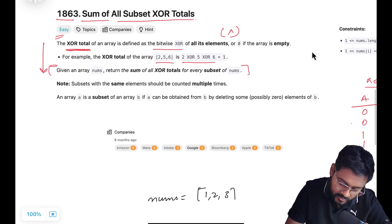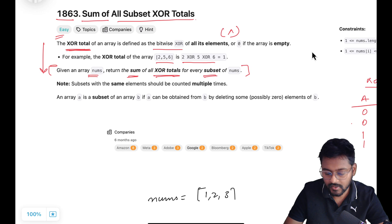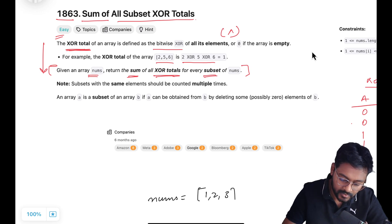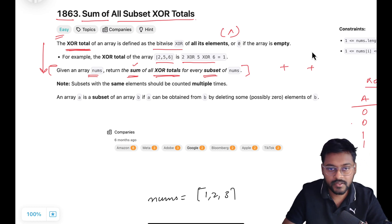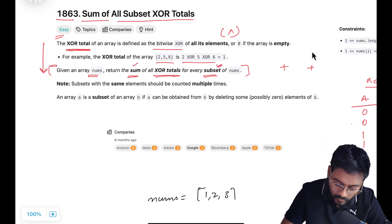After that what is given to us? Given is an array and we have to return the sum of XOR totals of every subset. We have to take a sum of all the elements and what are those elements? XOR totals. XOR totals we already know: whatever is the array, just take XOR operator on all the elements.